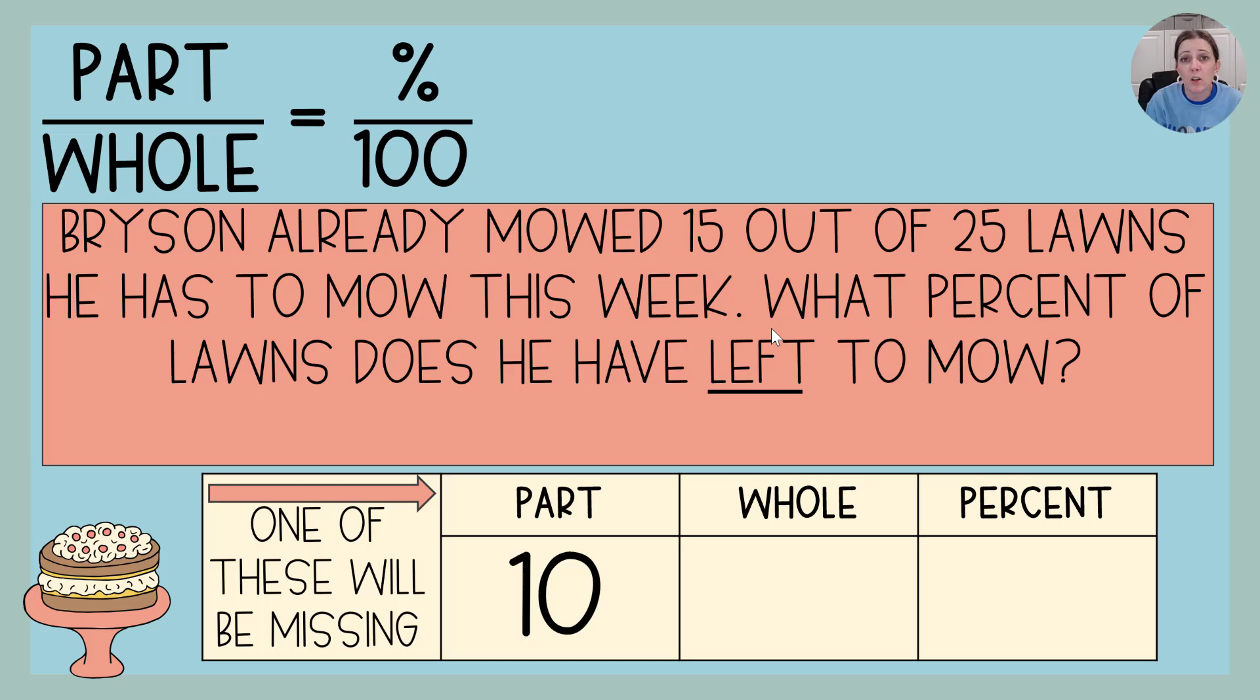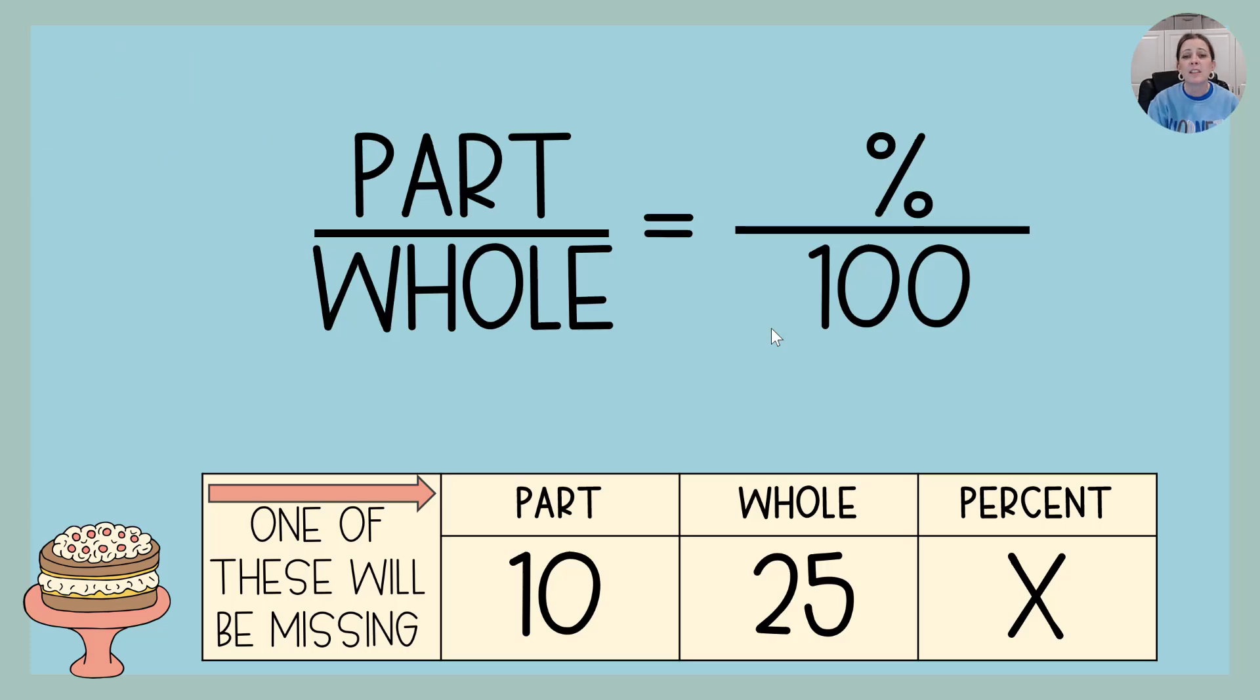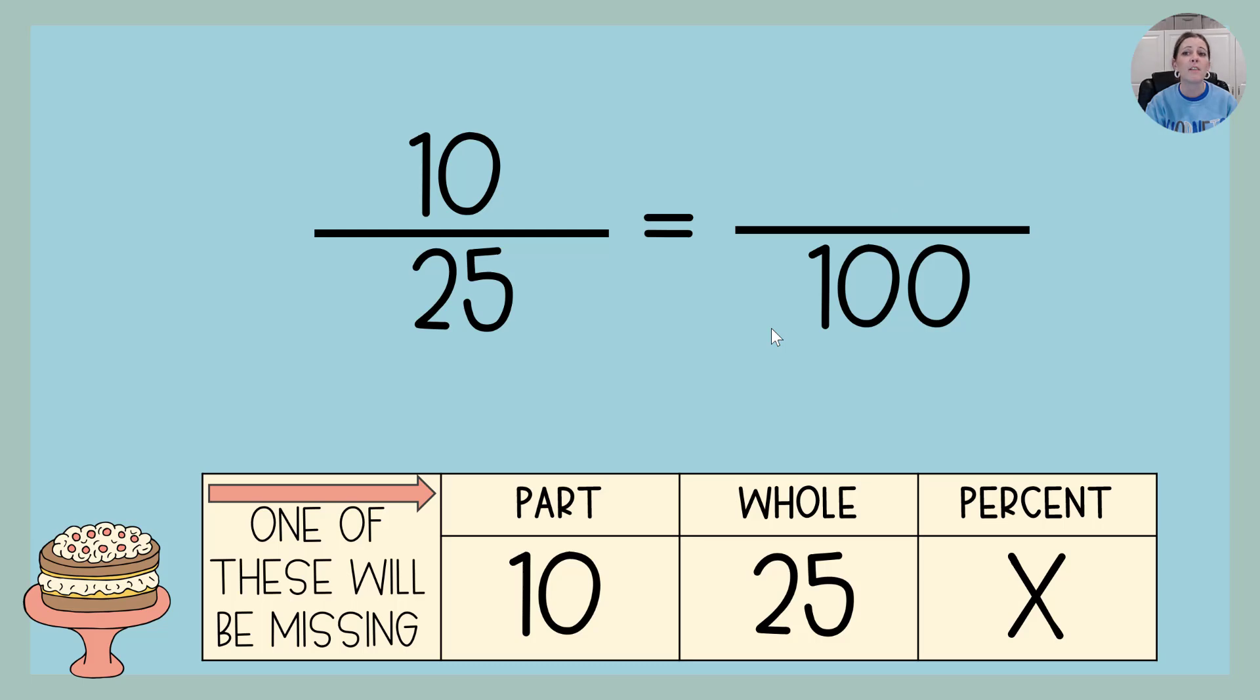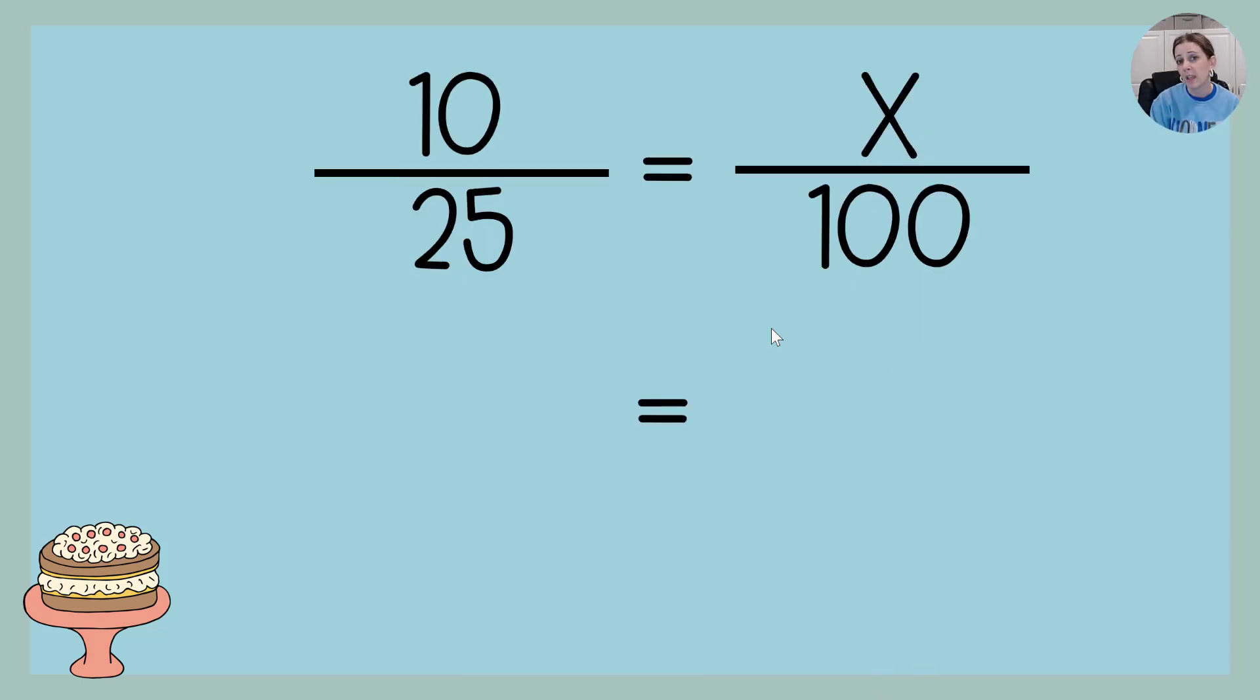The whole, this time we have it, how many yards or lawns does he have to mow? 25. The percent is what we don't have, because it says what percent of lawns does he have left. So let's take that and fill in our missing pieces. So our part was 10, our whole is 25, our percent is X.